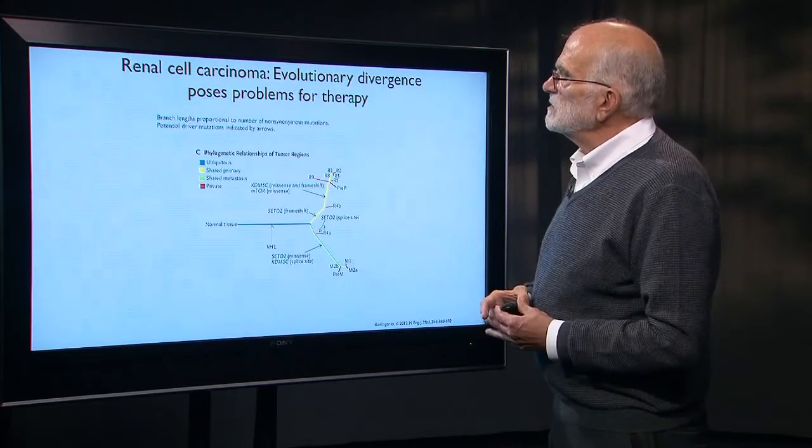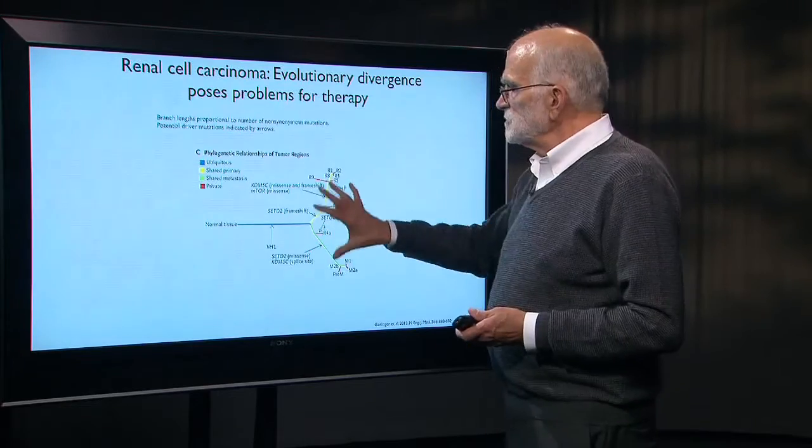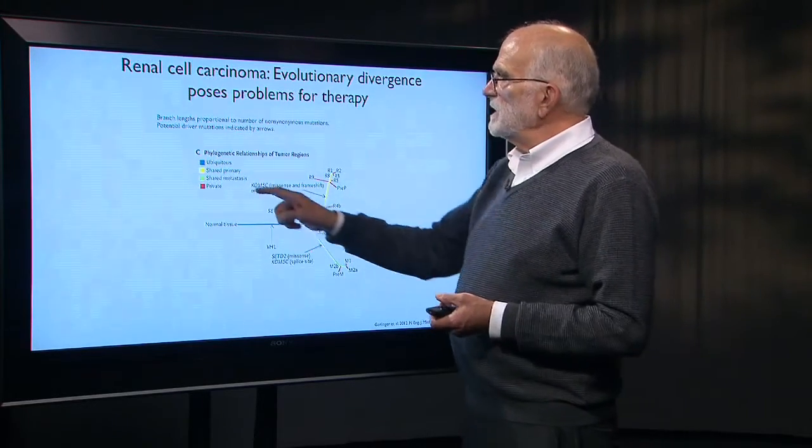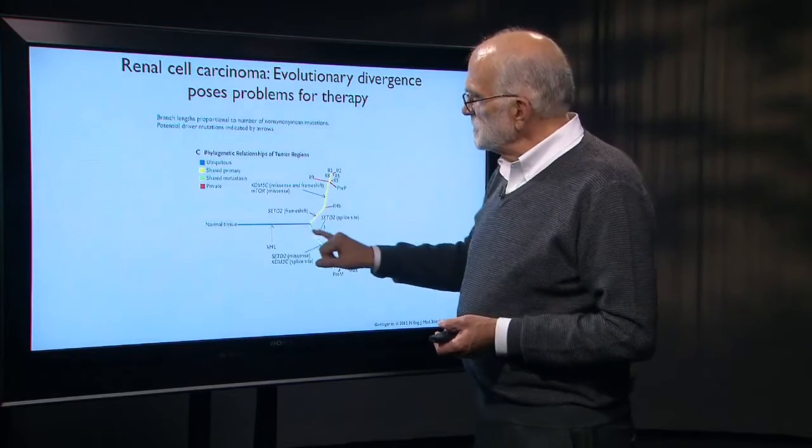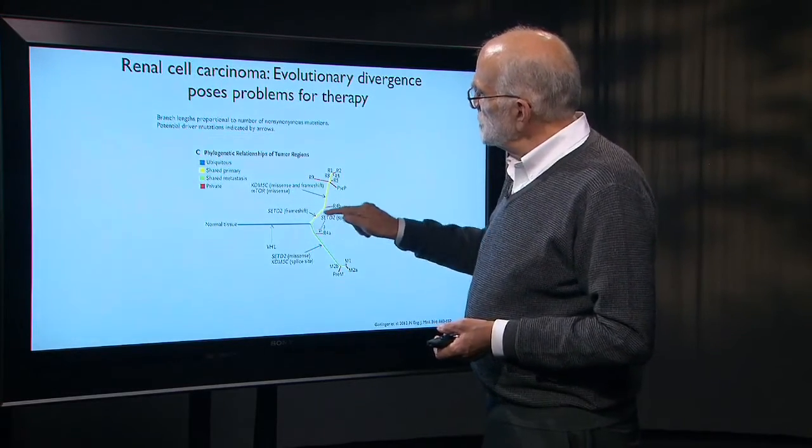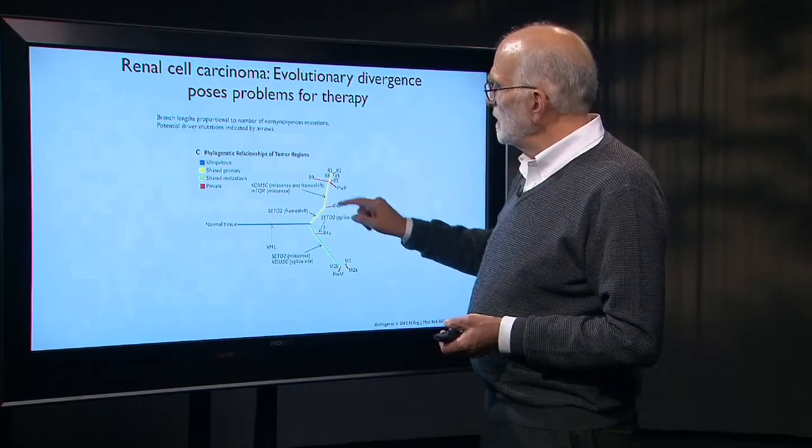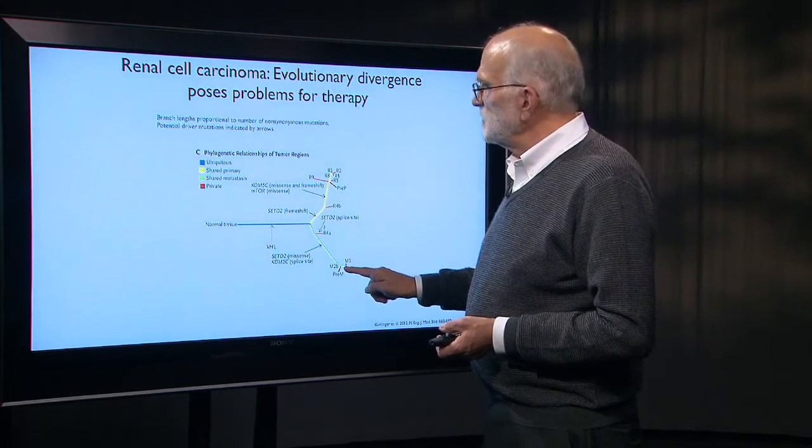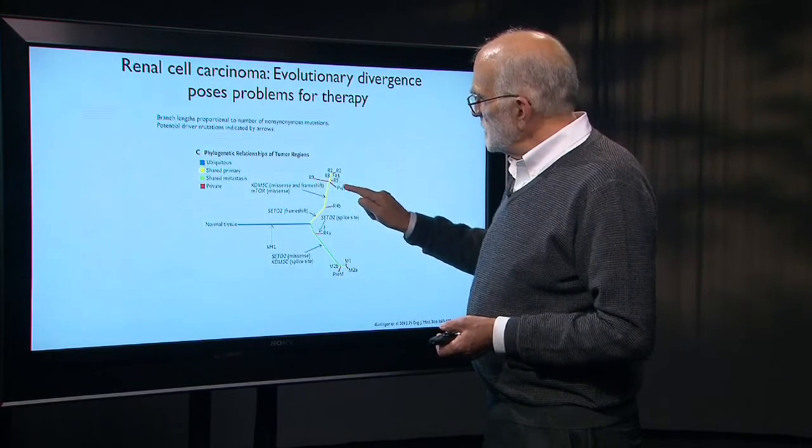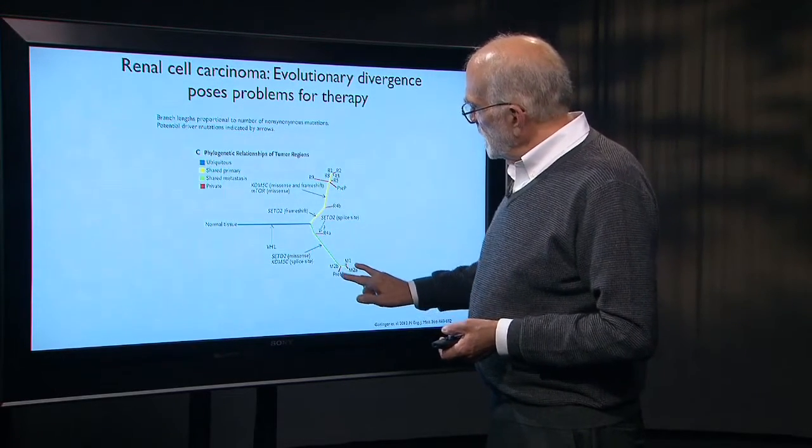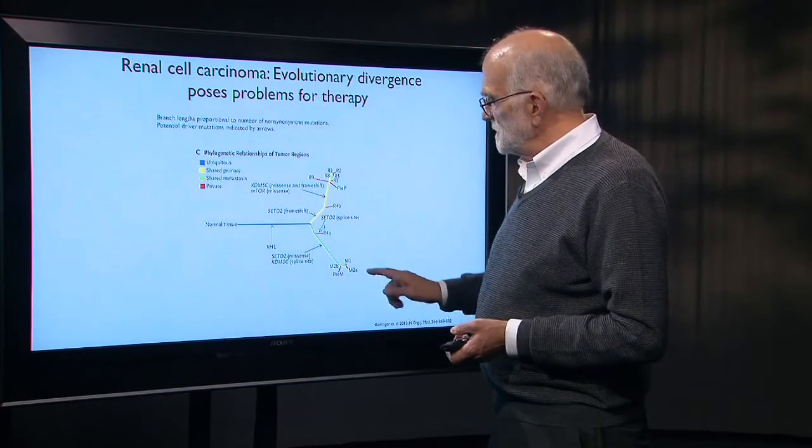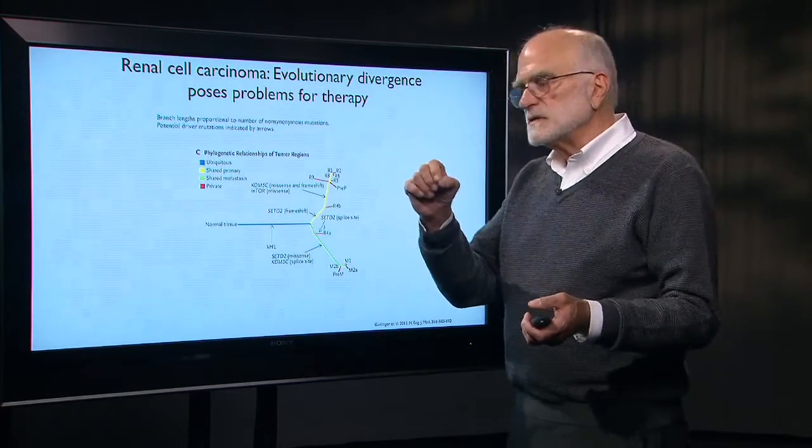This is the same data. And basically this is showing the phylogenetic tree of that renal cell carcinoma, where we have in blue the mutations that are found in normal tissue and are ubiquitous. Then we have shared primary mutations here. We have shared metastatic mutations here. And then there are some private mutations that crop up. And in the metastases there are several private mutations—that means just found on that one last little twig.